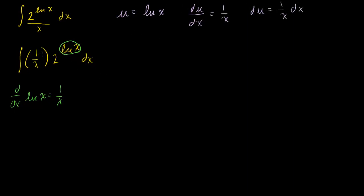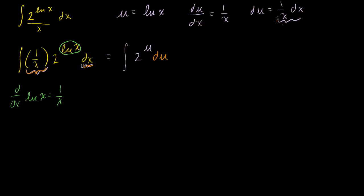So let's make our substitution. This integral will be equal to the indefinite integral, or the antiderivative, of 2 to the u, times 1 over x dx. Now what is 1 over x dx? That's just du — 1 over x times dx is just equal to du. Now this still doesn't look like an easy integral, although it's gotten simplified a good bit.